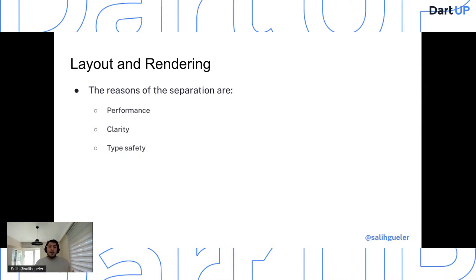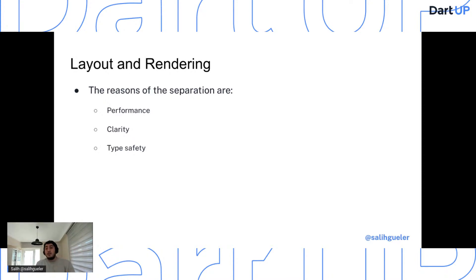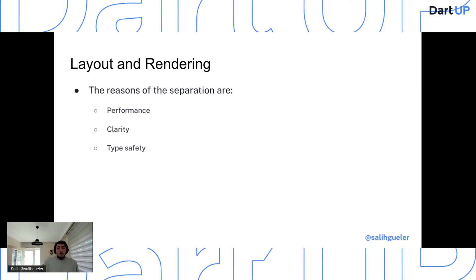Why do we have three different trees instead of one rigid tree? First, performance — since widgets are disposable and some objects can be reused thanks to the extra tree structures. Second, clarity — each operation has its own concern and is handled by the proper place. Third, type safety. These three reasons are why we have three different trees.